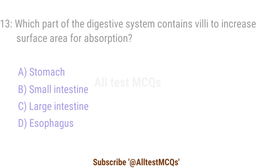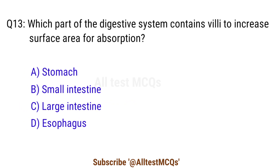Question 13. Which part of the digestive system contains villi to increase surface area for absorption? The right answer is option D. Small intestine.